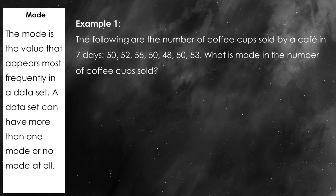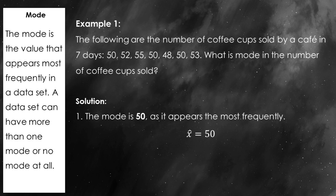Finally, let's talk about the mode. To find the mode, we simply look for the value that appears most frequently in the data set. For example, if a cafe sells 50, 52, 55, 50, 48, 50, and 53 cups of coffee over seven days, the mode is 50 because that's the number that occurs most often. The mode can be super useful, especially when you want to identify the most common value in your data set.